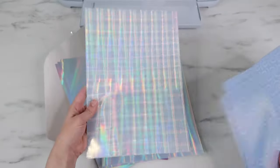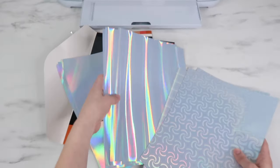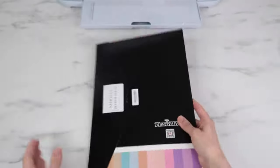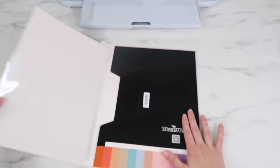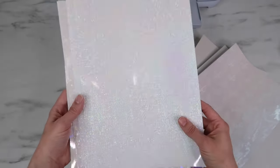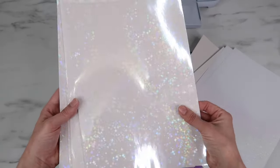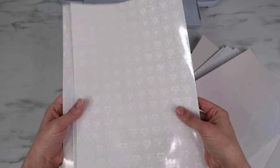They also sent me holographic printable sticker paper. You can actually print directly on this, which is really cool. I'm hoping to make a separate video on this as well. And they sent me laminate sheets. You can add these sheets on top of the matte sticker paper to give it a glossy and holographic look. I will be using one of these in today's video as well.